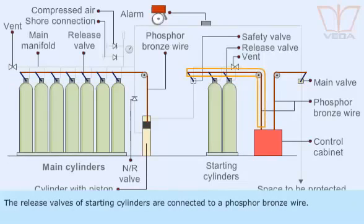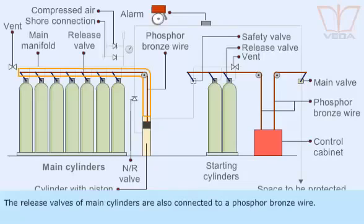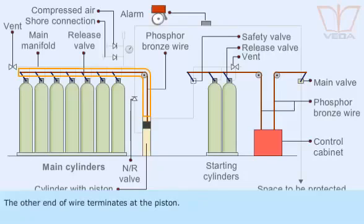The release valves of starting cylinders are connected to a phosphor bronze wire. The free end of the wire terminates inside a control cabinet. The release valves of main cylinders are also connected to a phosphor bronze wire, with the other end of the wire terminating at the piston.